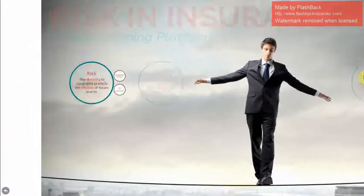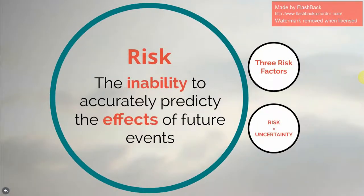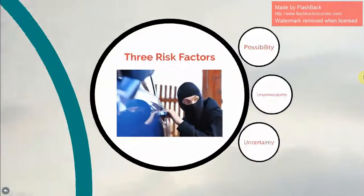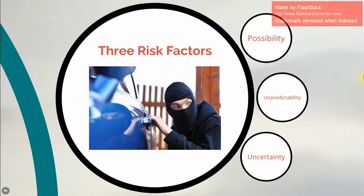Risk in insurance terms is the inability to accurately predict the effects of future events. For example, in layman's terms, if something may or may not happen. What makes risk so risky? There are three key factors to risk: possibility, uncertainty, and unpredictability.